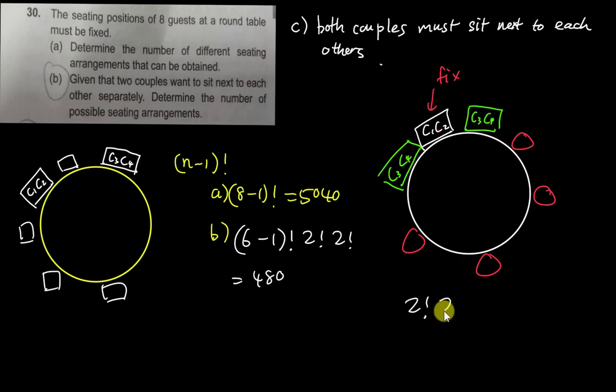So this two factorial is for C1, C2, and then another two factorial for C3, C4. And then both of them can swap places, so this one will be another two ways, or you can call it two factorial. And then four of them are going to be sitting here, so it's another four factorial. So it's basically four factorial multiply two times two times two, which is 192.